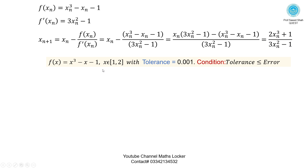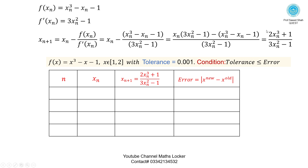Setting up the iteration table with formula xₙ₊₁ = (2xₙ³ + 1) / (3xₙ² - 1), interval [1, 2], tolerance 0.001. Iteration 1: Choose xₙ = 1. Then xₙ₊₁ = (2×1 + 1) / (3×1 - 1) = 3/2 = 1.5. Error = |1.5 - 1| = 0.5. Tolerance 0.001 < 0.5 — go to next iteration.